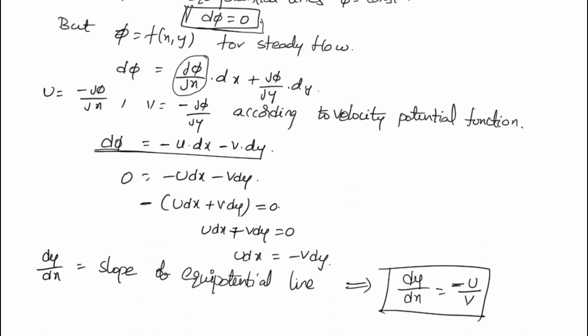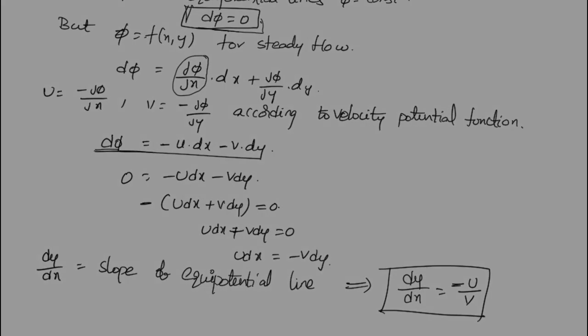So this is about the equipotential line — it is the line along which the velocity potential function is constant. This equipotential line will be used in the next sections to derive the relationship with other functions.